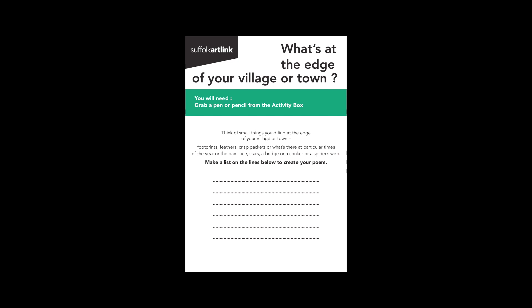Footprints, feathers, crisp packets — or what's there at particular times of the year or the day: ice, stars, a bridge, a conker, or a spider's web. Make a list on the lines on the activity card. Why not grab another piece of paper and write another poem?